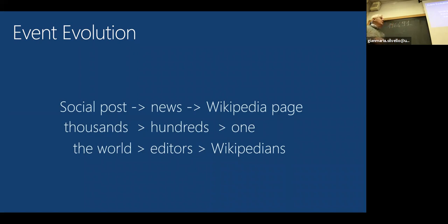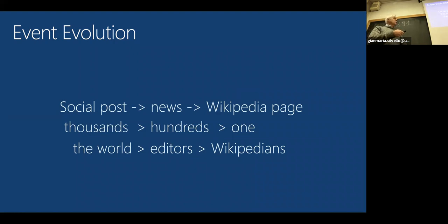What is the goal here? If you're using Twitter, there are a lot of social posts that will eventually make it into a news article, and then when the news article and event die, they go to Wikipedia. Imagine the U.S. election: we have millions of tweets about who is winning, and then there are important newspaper articles, and finally just one Wikipedia page describing the U.S. election.